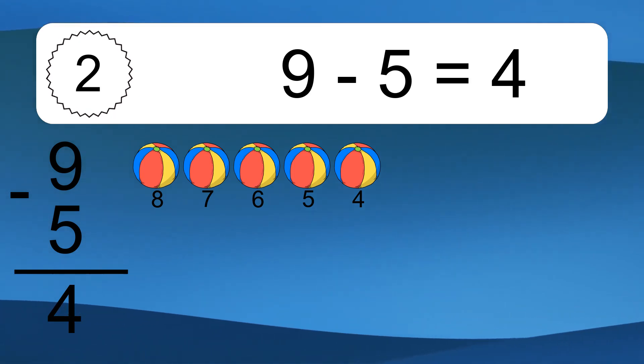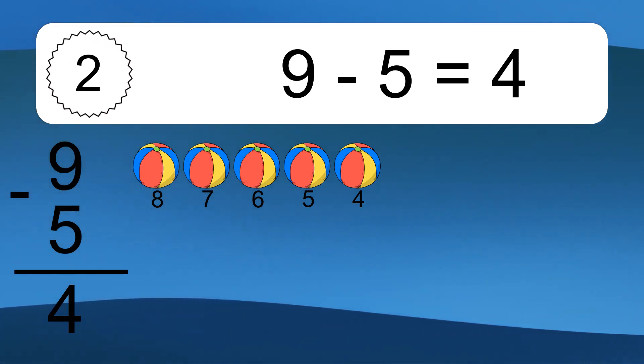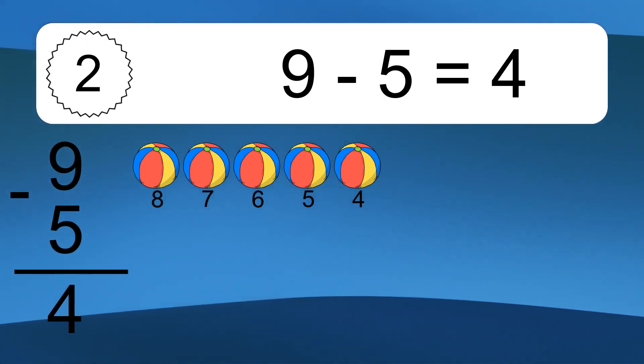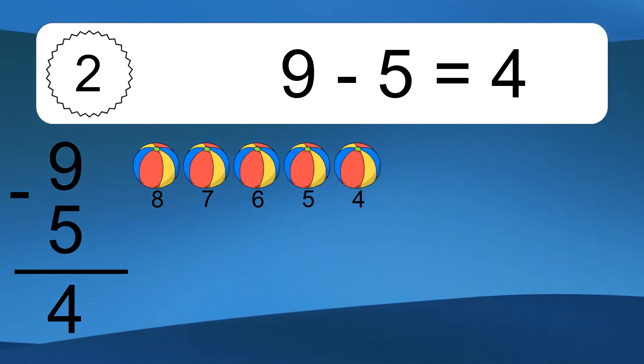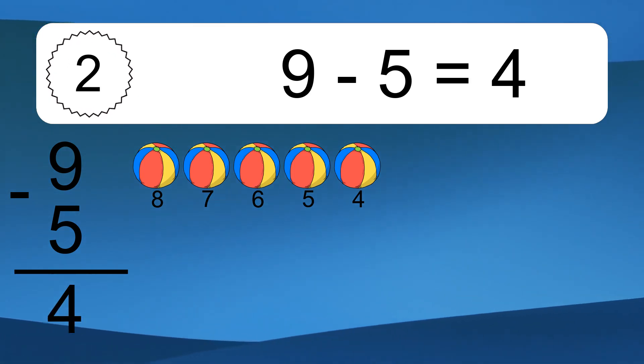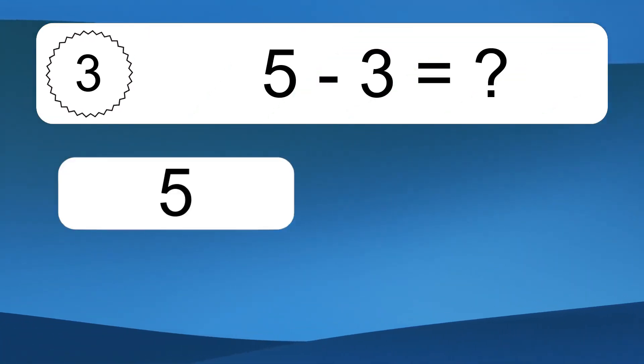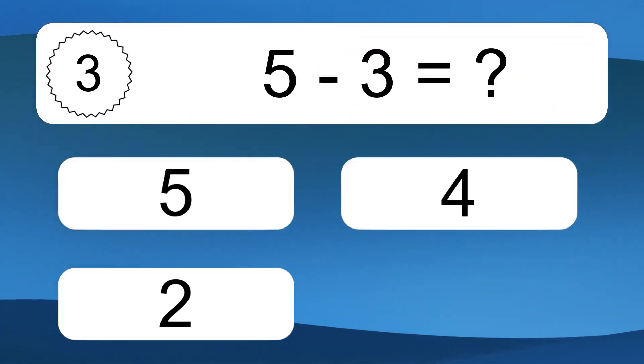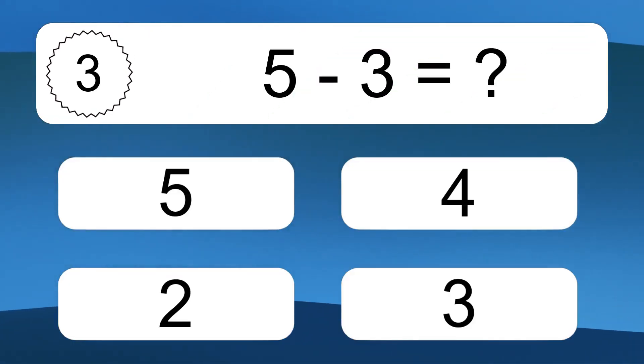Let's count it. 8, 7, 6, 5, 4. 9 minus 5 equals 4.